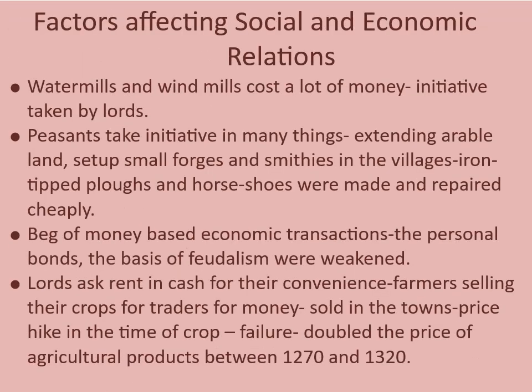Water mills and windmills cost a lot of money; the initiative was initially taken by lords, but peasants also took initiative in many things: extending arable land, setting up small forges and smiths in the village where iron-tipped plows and horseshoes were made cheaply. Money-based economic transactions grew. The personal bonds that were the basis of feudalism were weakened. Lords asked rent in cash; farmers sold their crops to traders for money in towns. Prices hiked in the time of crop failure, doubling the price of agricultural products between 1270 and 1320. Slowly they tried to solve their problems of low income and low agricultural production, though complications in life still remained.